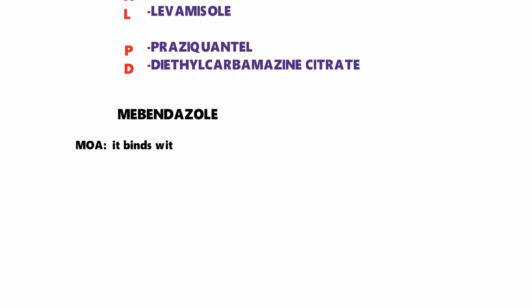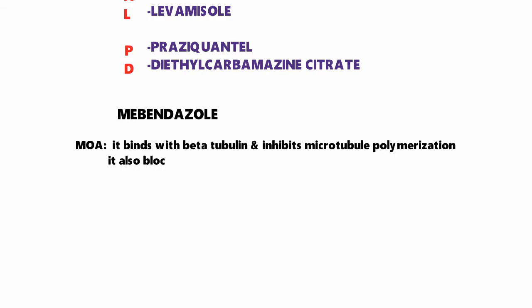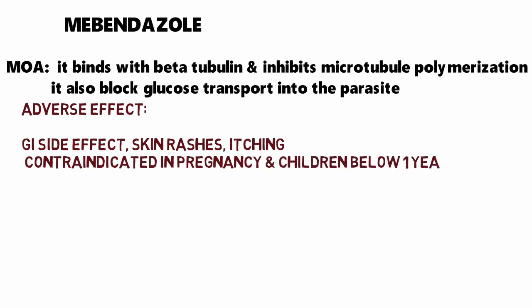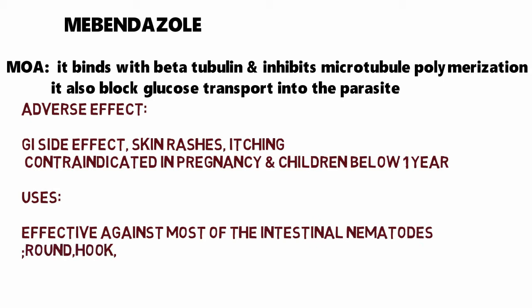The first drug is mebendazole. The mechanism of action of mebendazole is it binds with beta-tubulin and inhibits microtubule polymerization, and it also blocks glucose transport into the parasite. The adverse effects include GI effects, skin rashes, and itching. It is contraindicated in pregnancy and children below one year. Uses include being effective against most intestinal nematodes: roundworm, hookworm, whipworm, and pinworms.